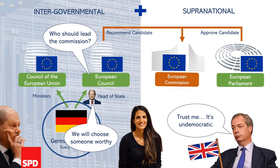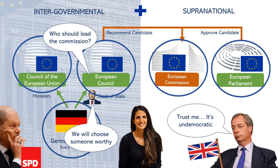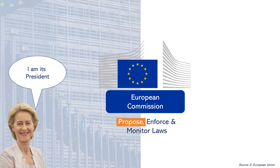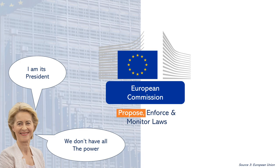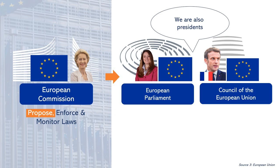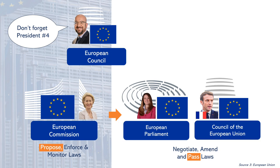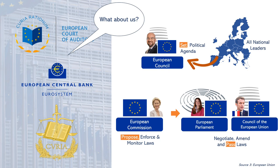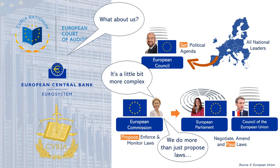Before looking at the democratic deficiencies, it is important to understand what these institutions do, especially in terms of creating new European laws. In a nutshell, the European Commission acts like the executive branch of the EU and is responsible for drafting, enforcing, and monitoring EU laws, but it does not pass laws. This responsibility lies with the Parliament and the Council of the European Union, who negotiate, amend, and adopt new laws. And then there's the European Council, who brings together EU leaders to set the EU's political agenda — it acts like a collective presidency.